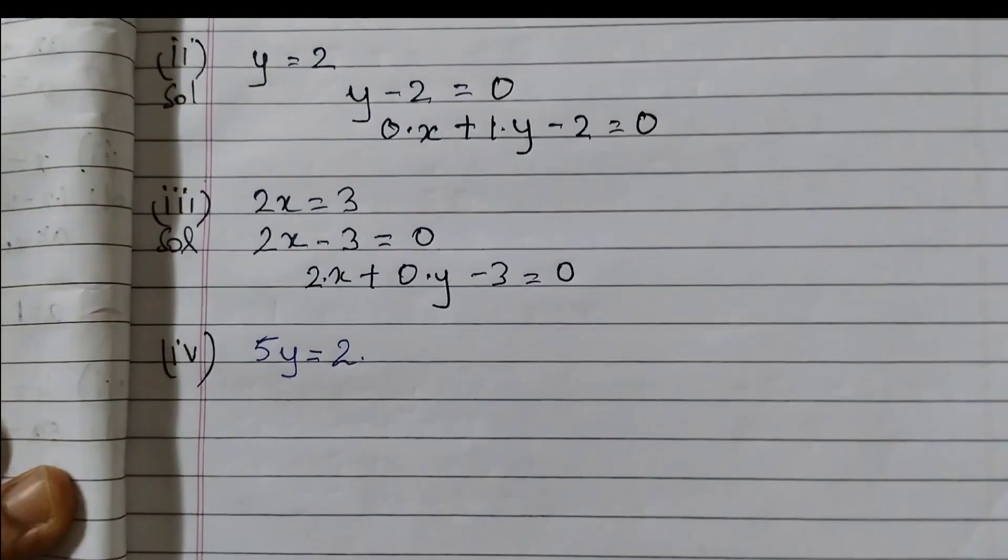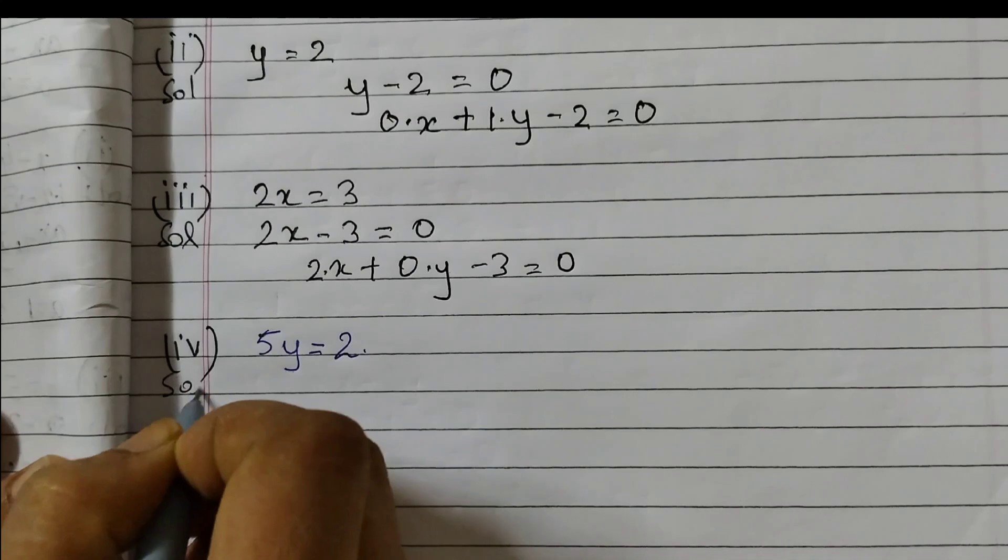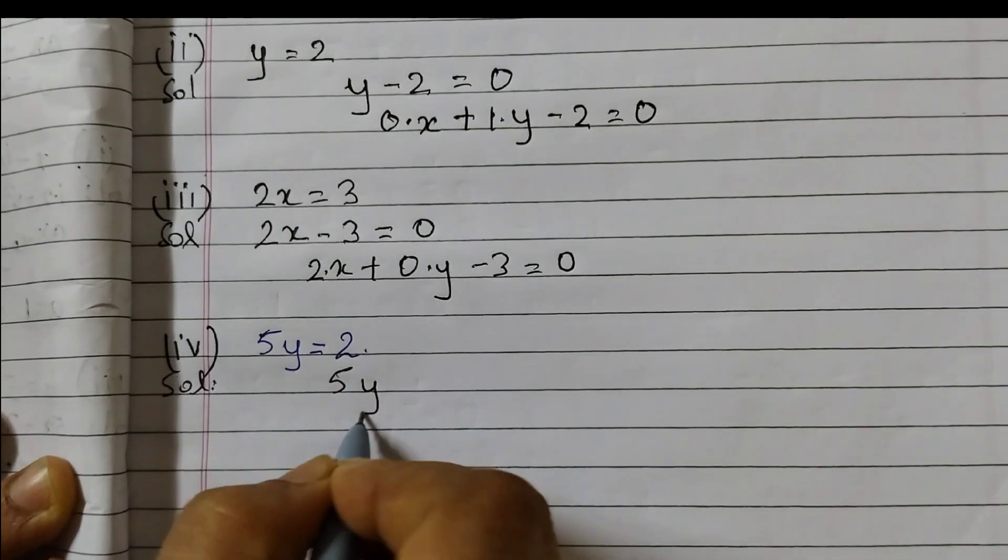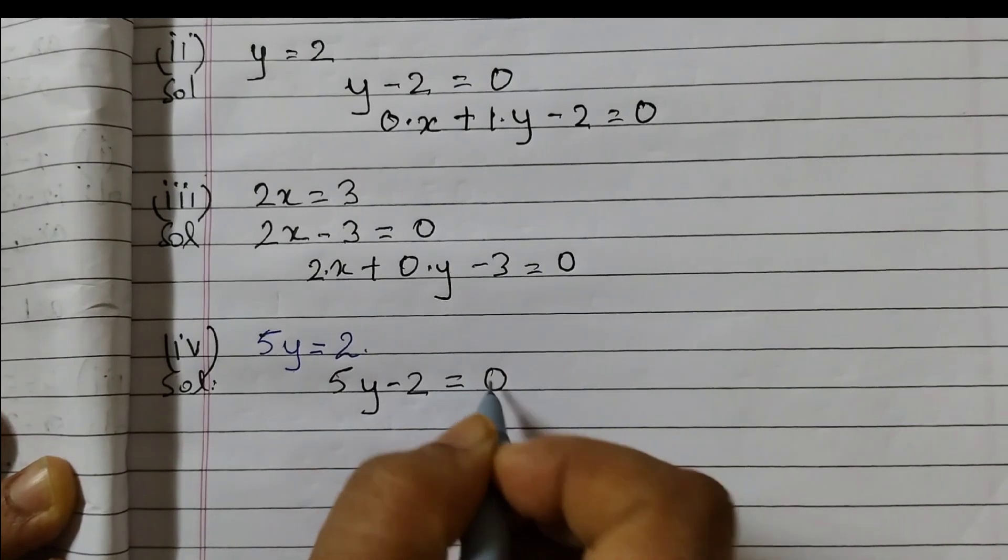Fourth one is 5y is equal to 2. So get 2 to the left hand side, 5y minus 2 is equal to 0.